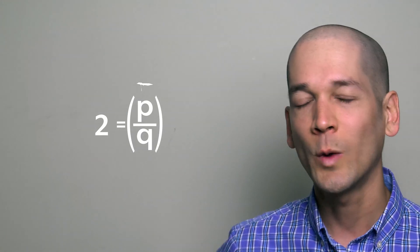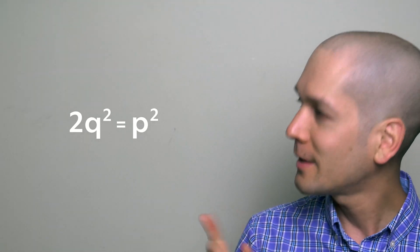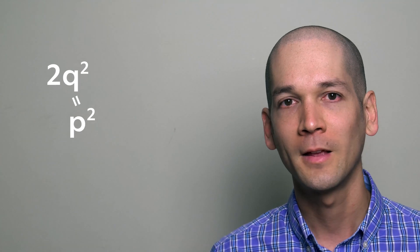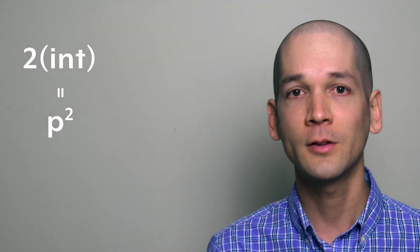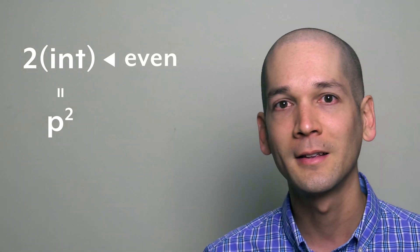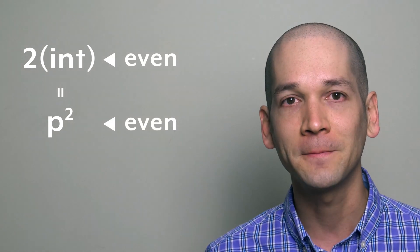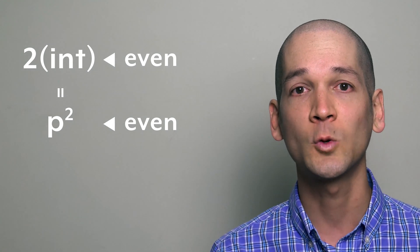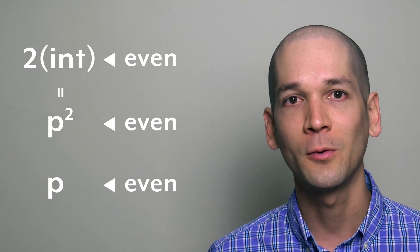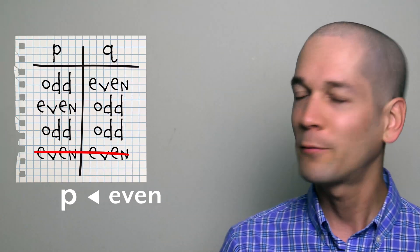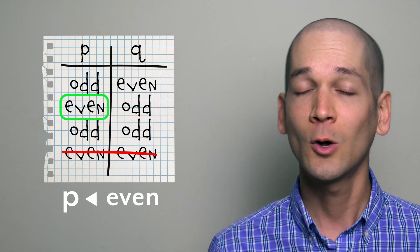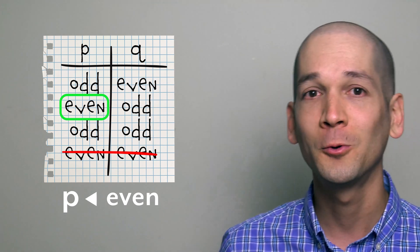Rearranging the equation gives us: 2q squared equals p squared. q squared is an integer, and 2 times any integer is even. Since p squared equals that, p squared must also be even. And as discussed earlier, every odd number squared is odd. Since p squared is even, p must also be even. Going back to our table, there is only one available combination with p being even, so we can conclude that q is odd.